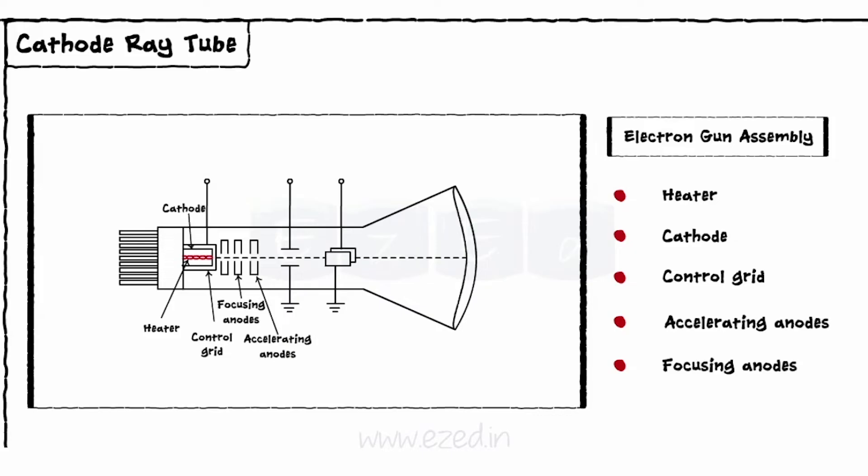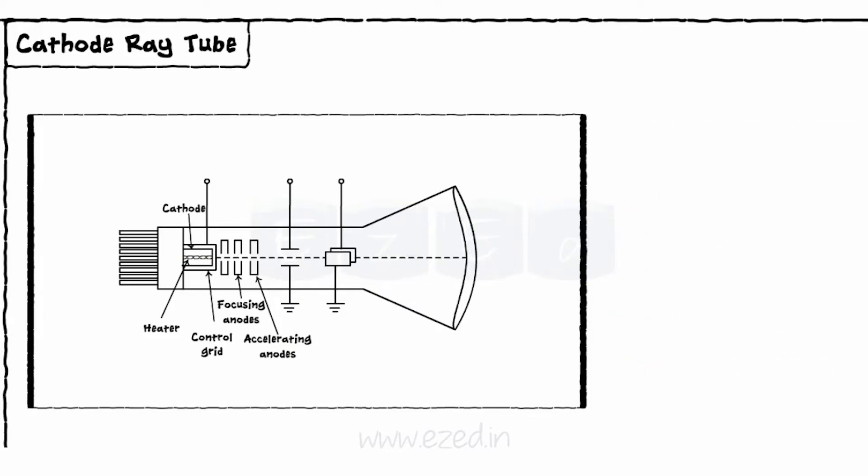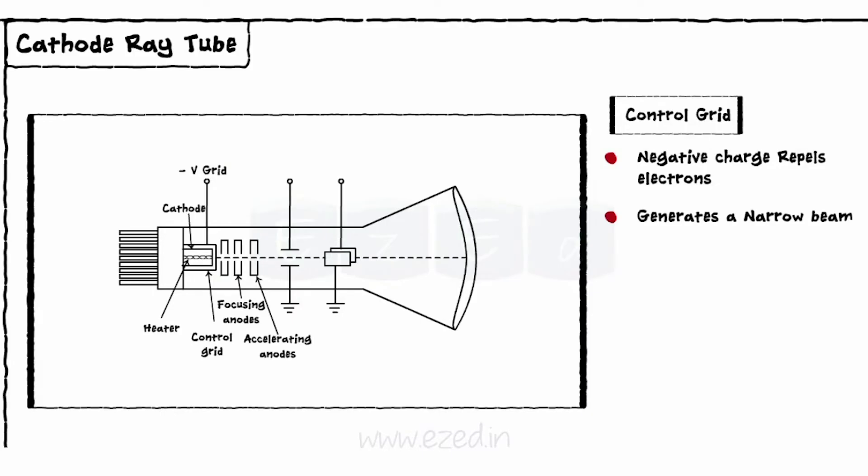Cathode is indirectly heated to emit electrons. These electrons are then passed through the control grid. The control grid has a centrally located hole, coaxial with the axis of the tube. A negative voltage is supplied to the grid. This negative charge repels electrons and generates a narrow beam. Thus, by controlling the negative voltage applied to the control grid, we can control the intensity of the beam.